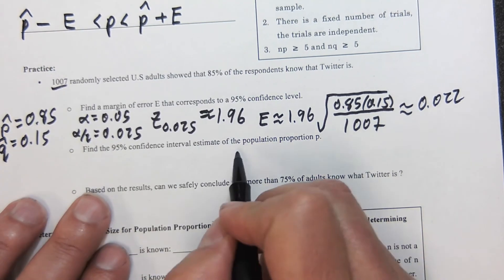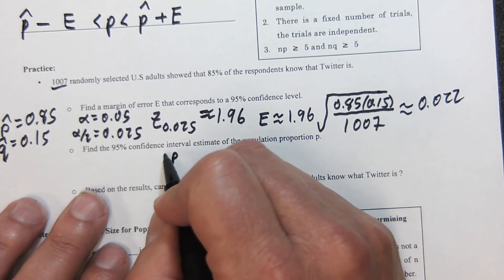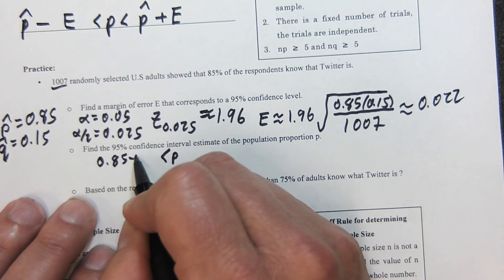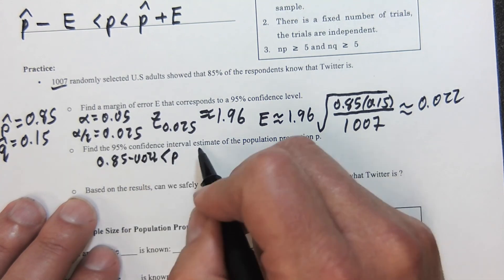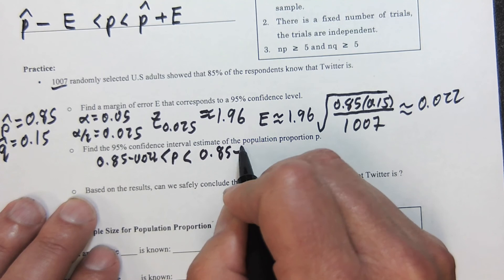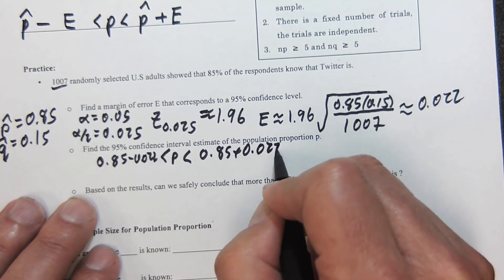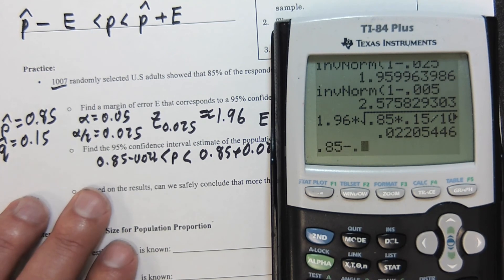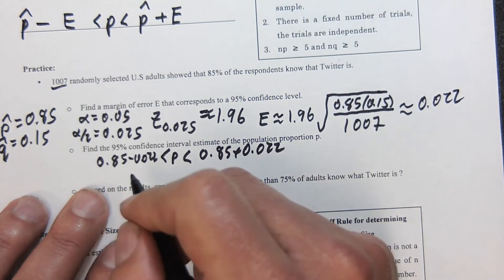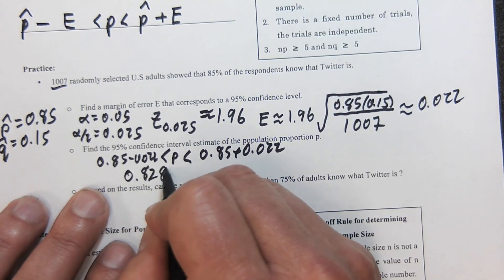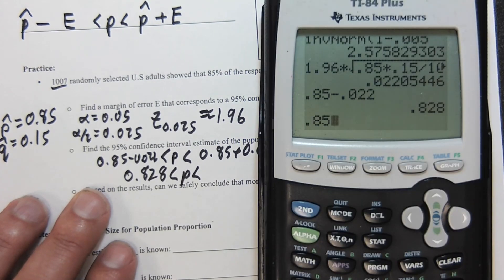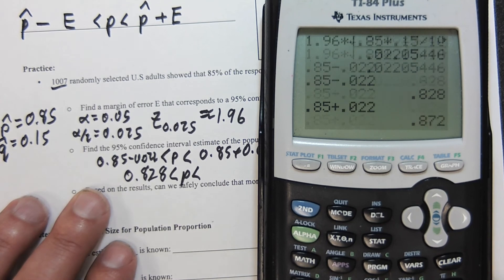So we're going to find a confidence interval that matches this. P hat once again is 0.85 minus 0.022—there's my lower boundary. 0.85 plus 0.022—there's my upper boundary.